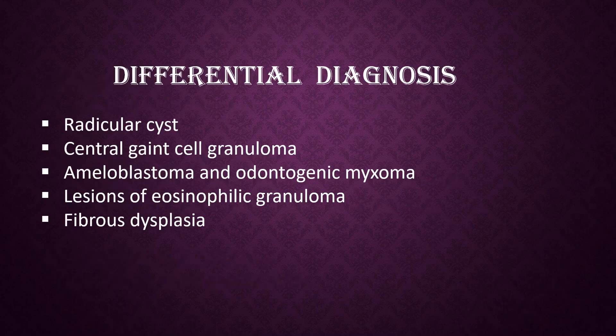Differential diagnosis: Radicular cyst — the tooth is usually non-vital, and radicular cysts tend to have a more rounded appearance. Central giant cell granuloma — it usually shows evidence of internal bone resorption, which traumatic bone cyst generally lacks, and it is more common in the mandibular anterior region. Ameloblastoma and odontogenic myxoma — these are usually multilocular. Eosinophilic granuloma lesions — these are not as well corticated as traumatic bone cyst. Fibrous dysplasia — it is also not well corticated.